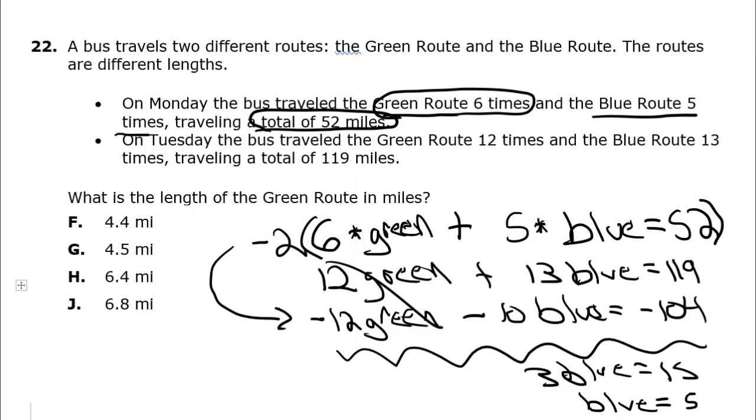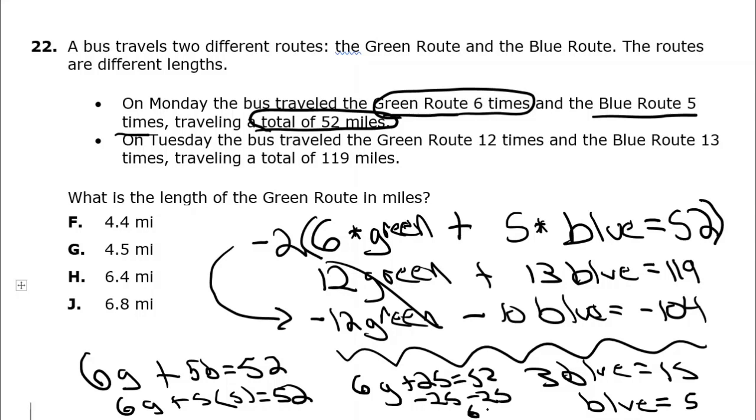That should be the length of the blue route. Now we can go back up to the original equation and say, we got 6 green plus 5 blue equals 52. I can substitute the 5 for the blue route. So 6 green plus 5 times 5 equals 52. 5 times 5 is 25, so 6 green plus 25 equals 52. Subtract 25 from both sides. 6 green equals 52 minus 25, that should be 27.